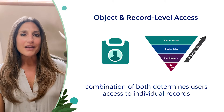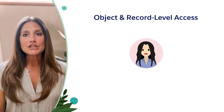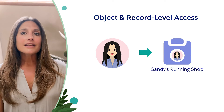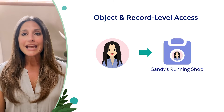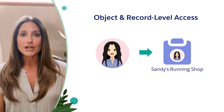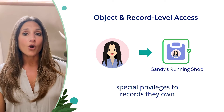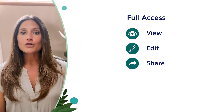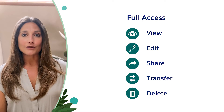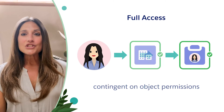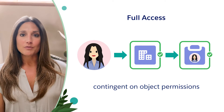Aleema is a sales rep for NTO and is the record owner of an account called Sandy's Running Shop. Aleema is responsible for building and maintaining this customer relationship for NTO. Record owners do get special privileges to records that they own, and this is called full access. Full access gives record owners the ability to view, edit, share, transfer, and delete their own records. But here's the catch: full access is contingent or dependent on Aleema's object permissions.